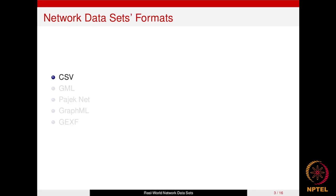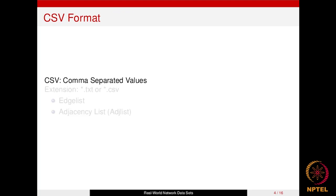These networks are available in different formats. We have CSV format, GML format, Pajek format, GraphML format, and GEXF format. These five are the most commonly used formats, and data sets downloaded from the internet will most likely be in one of them. Let's take a look at each format in detail.